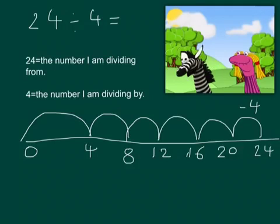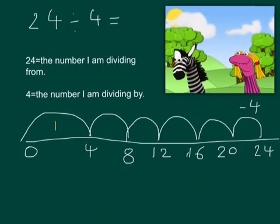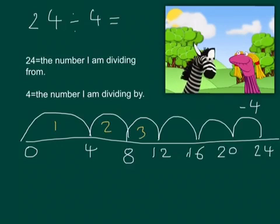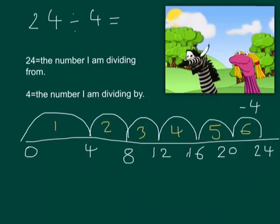Finally, we need to count the number of jumps or groups of 4 that we've made. So, we count 1, 2, 3, 4, 5, and 6. So, our answer to 24 divided by 4 equals 6.